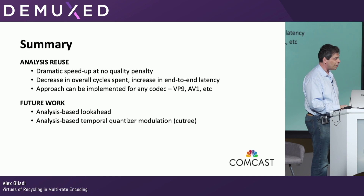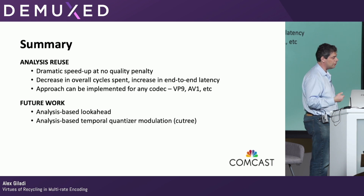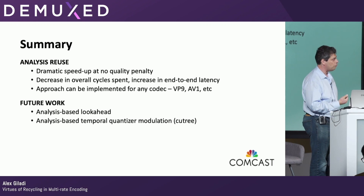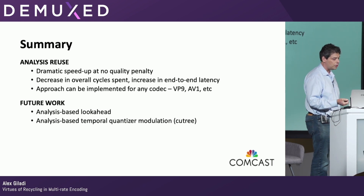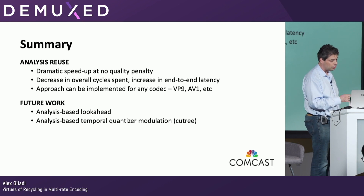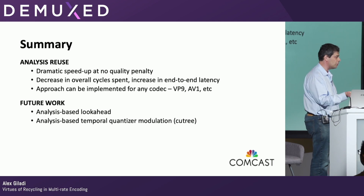What we've seen is that if we reuse the results of the analysis stage of the encoder, we can achieve a dramatic speedup at no quality cost. This decrease in cycles spent on encoding comes at the price of an increase in end-to-end latency, which can be solved by split-and-stitch — just split into smaller chunks and you'll be fine. The approach, while discussed here in the context of HEVC, can also be done in VP9 and AV1. Whoever is interested in working on it, I'd be glad to hear about experiences, results, and what we did wrong.